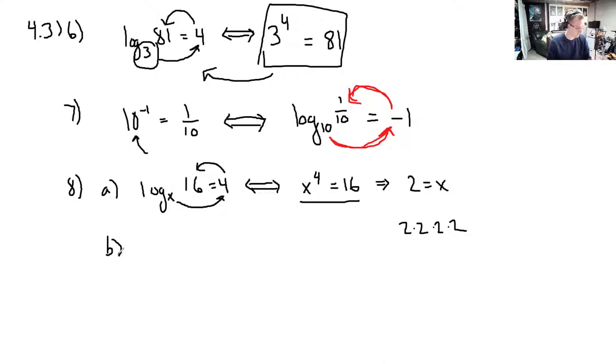Part B of question 8 is, solve this one, log base 10 of x is negative 3. Just like in 8a where we were solving for x, we're solving for x here as well. So again, we're going to translate this into exponential form. And that's actually just going to pop out our answer. So this is translated into exponential form. 10 to the negative third. 10 to the negative third is x.